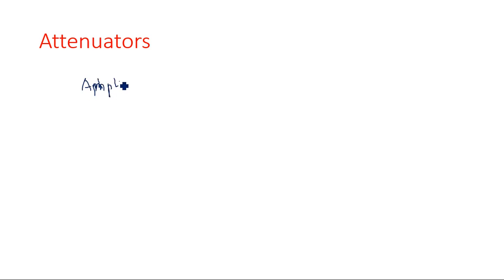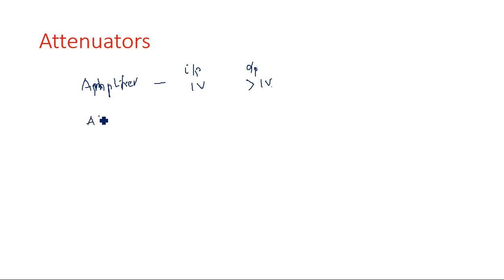We can say it is the opposite action of an amplifier. An amplifier is used to amplify the input signal — if you are giving one volt input, the output is greater than one volt, like two volts, three volts, or five volts, depending upon the type of amplification. But in the case of an attenuator, it is a resistive circuit used to reduce the amplitude. If you are giving one volt, the output is less than one volt, depending upon the construction and choice of resistors.